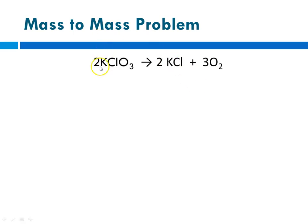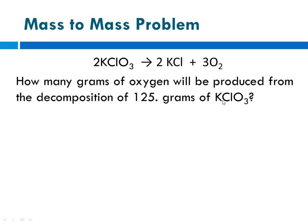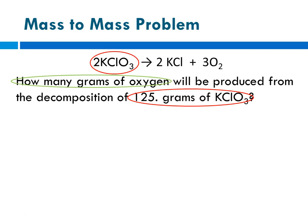So for the reaction: 2 potassium chlorate decomposes to 2 potassium chloride plus 3 oxygen — how many grams of oxygen will be produced from the decomposition of 125 grams of potassium chlorate? The given here is 125 grams of potassium chlorate, and the unknown is how many grams of oxygen will be produced. It's always a good idea to circle the given and the unknown because those are the two things that will be in your mole ratio.